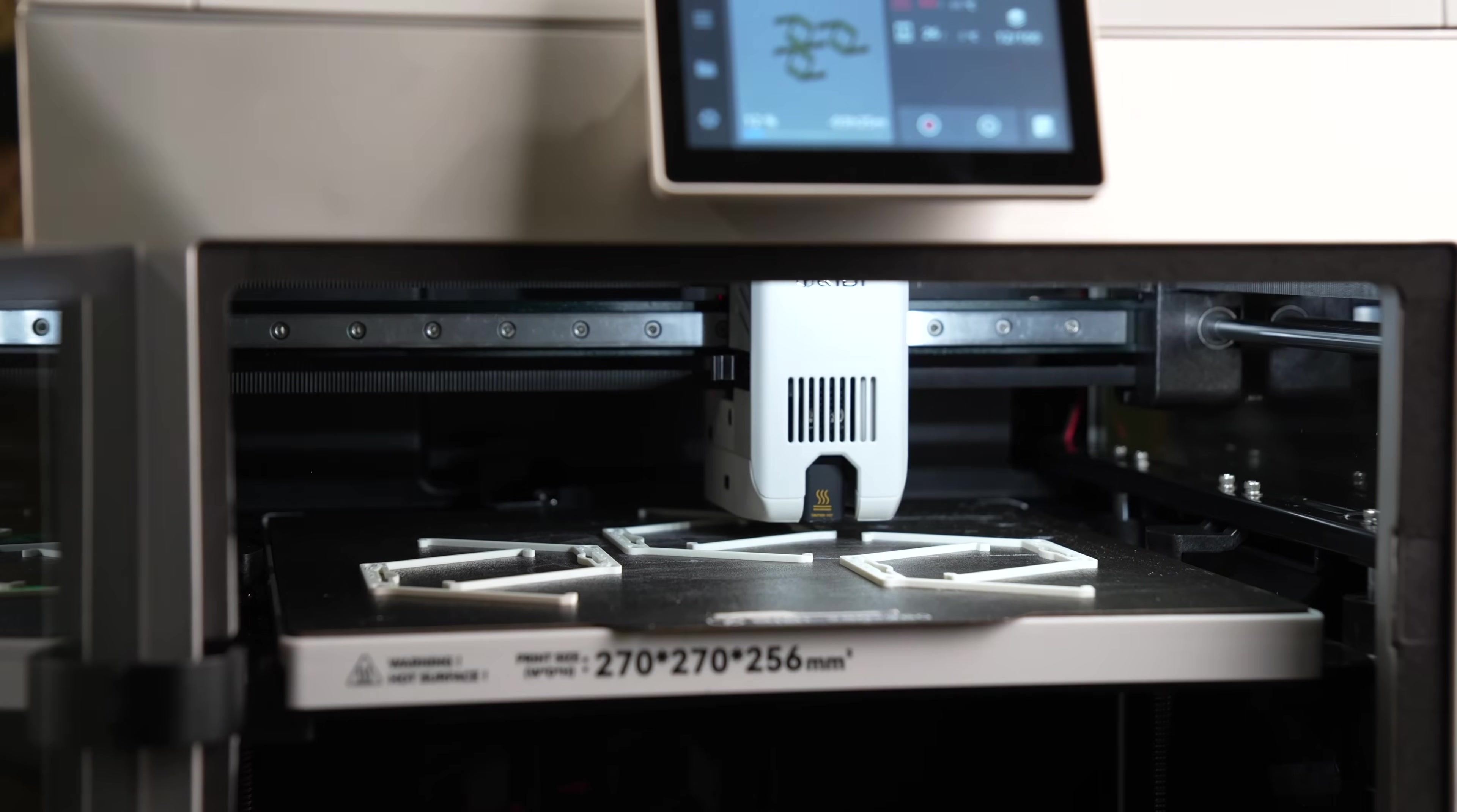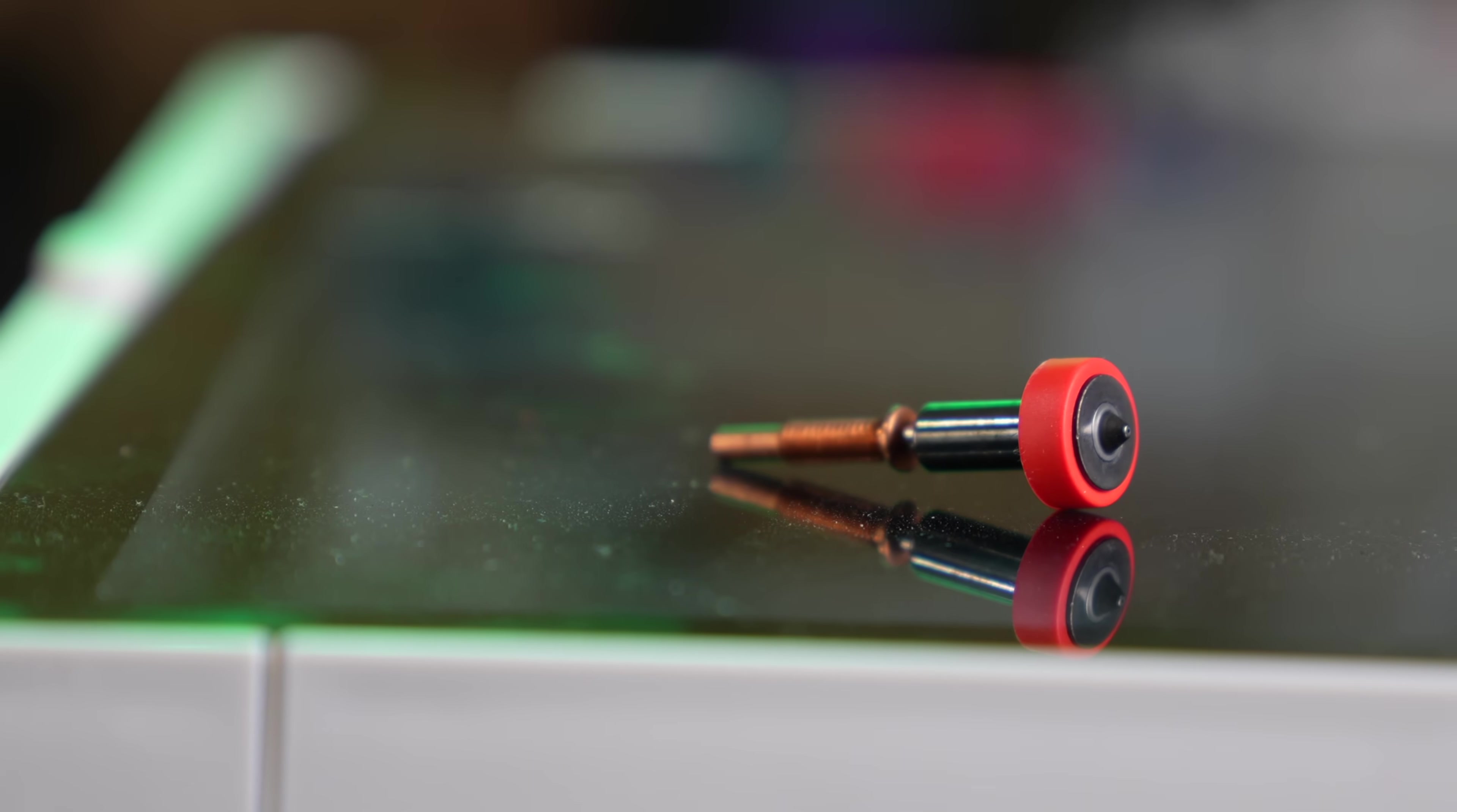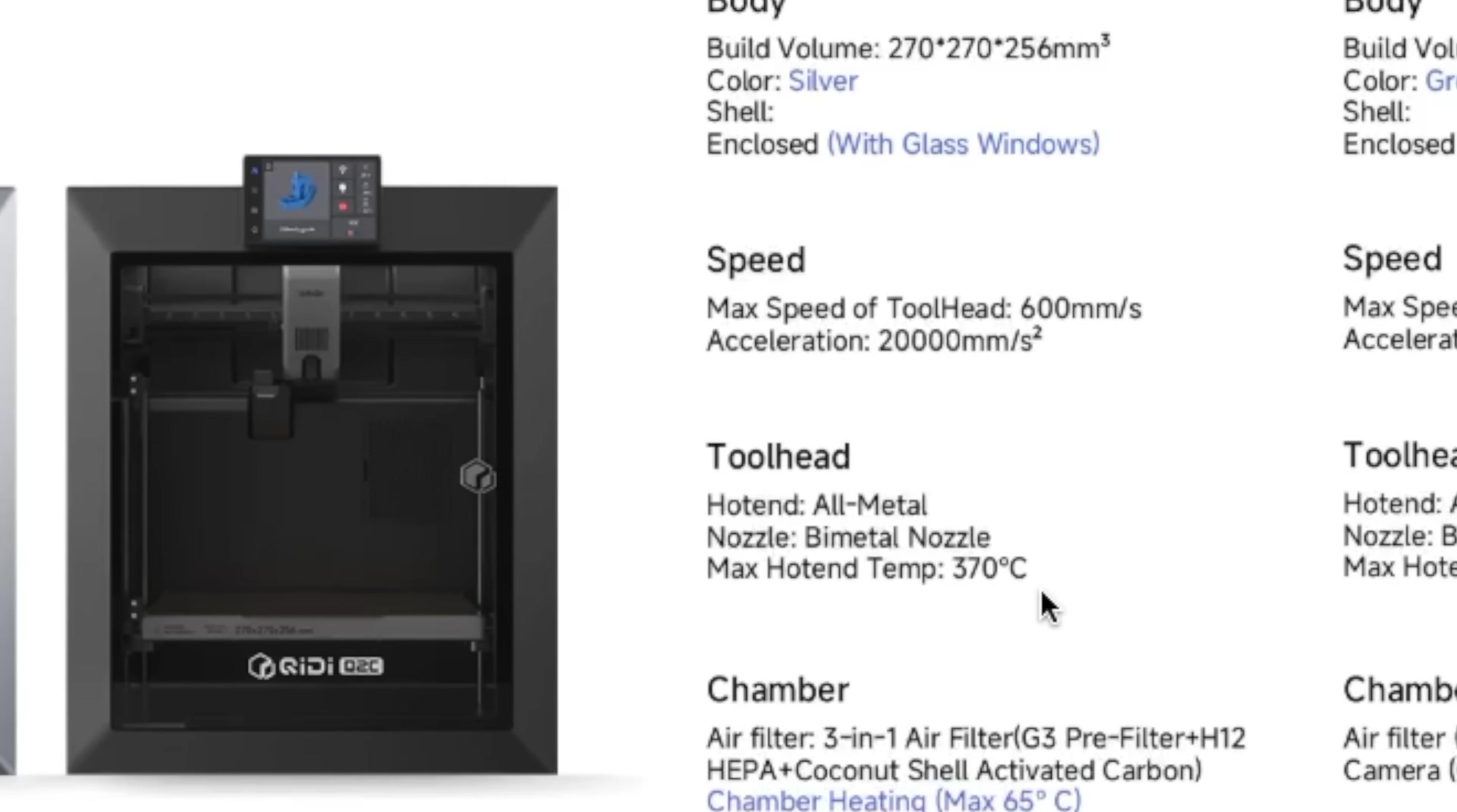There's really two key things your printer needs to be able to print with PET-GF15, and the first is a hot end capable of reaching 280 to 310 celsius and a hardened steel nozzle due to the abrasiveness of the glass fibers. For all my testing, I used the Chidi Q2, a fully enclosed Core-XY 3D printer that I've been testing out for some months now. This ships with a bi-metal nozzle using a hardened tip, and the hot end can get all the way up to 370 celsius.